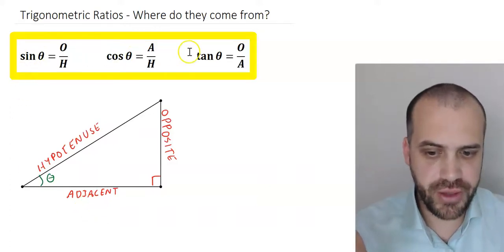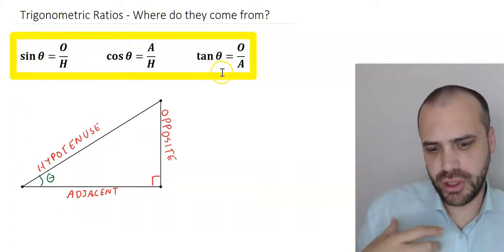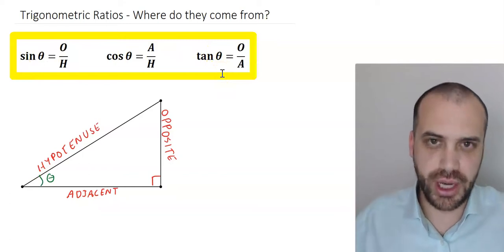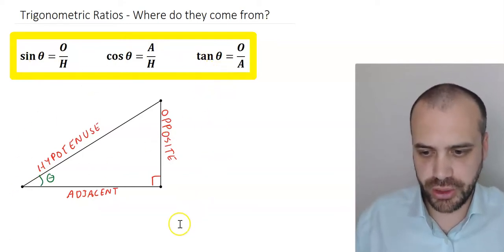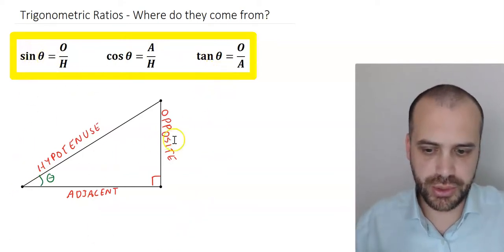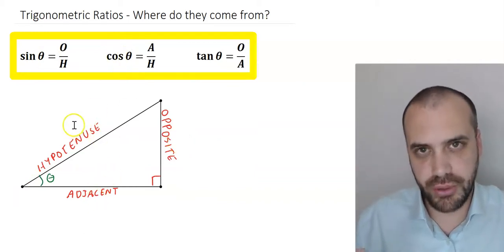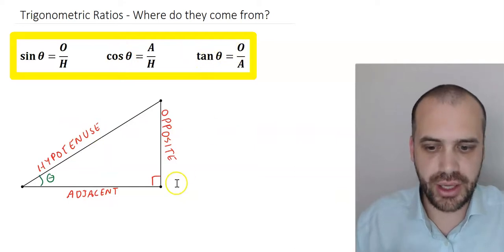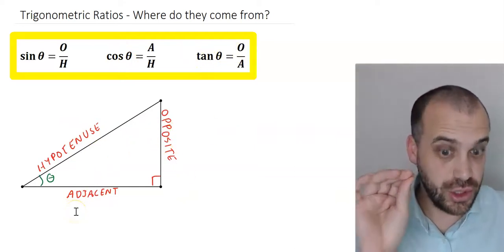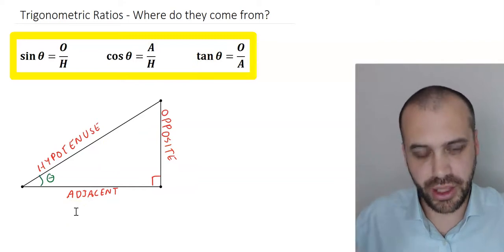By the end of this video you're going to know three formulas, but more importantly you're going to know where those three formulas come from. So when it comes to a triangle like this, sine theta equals opposite divided by hypotenuse, cos theta equals adjacent over hypotenuse, and tan theta equals opposite over adjacent. Now that makes no sense right now but it will in a minute I hope.